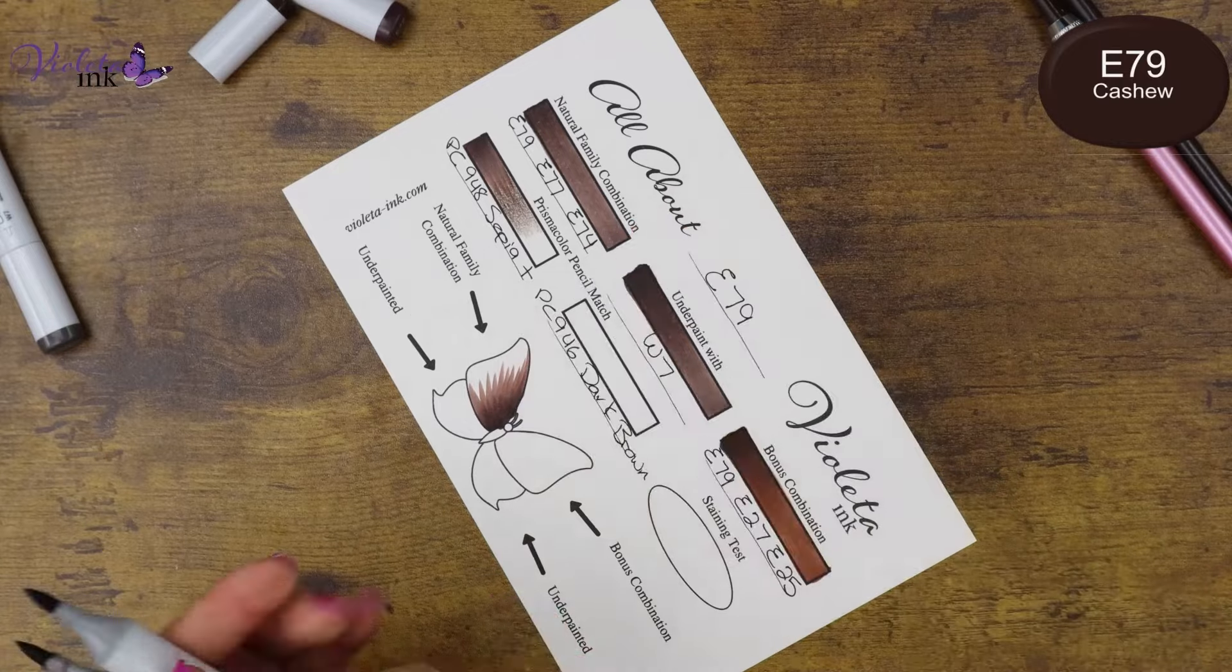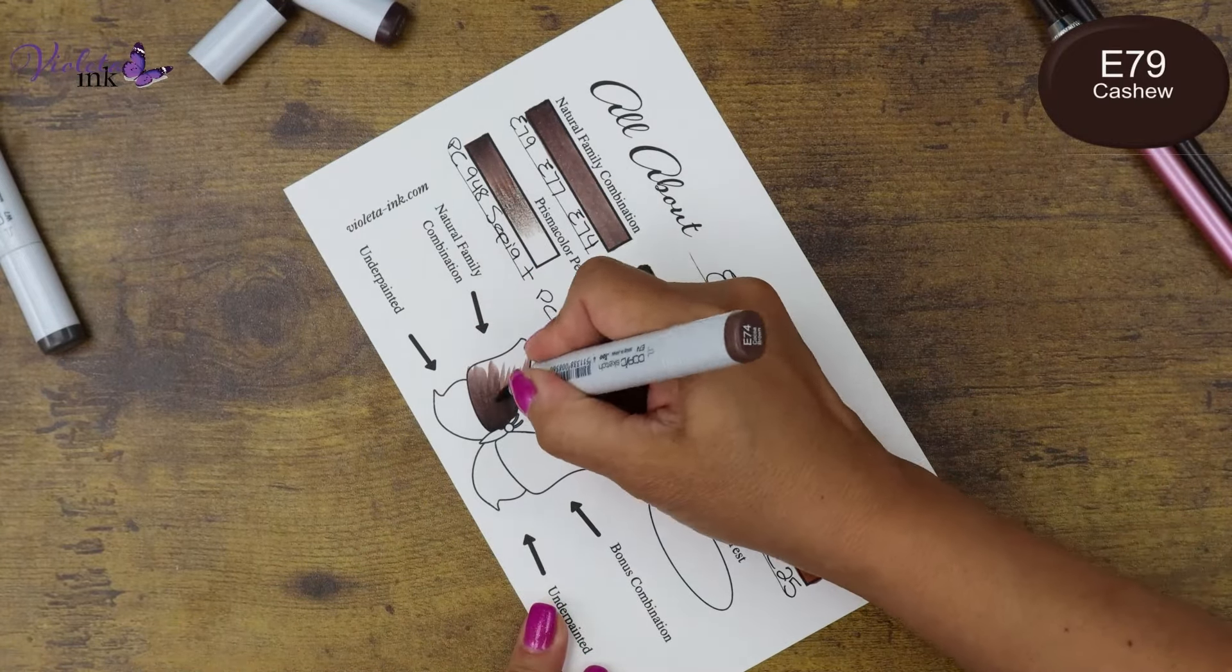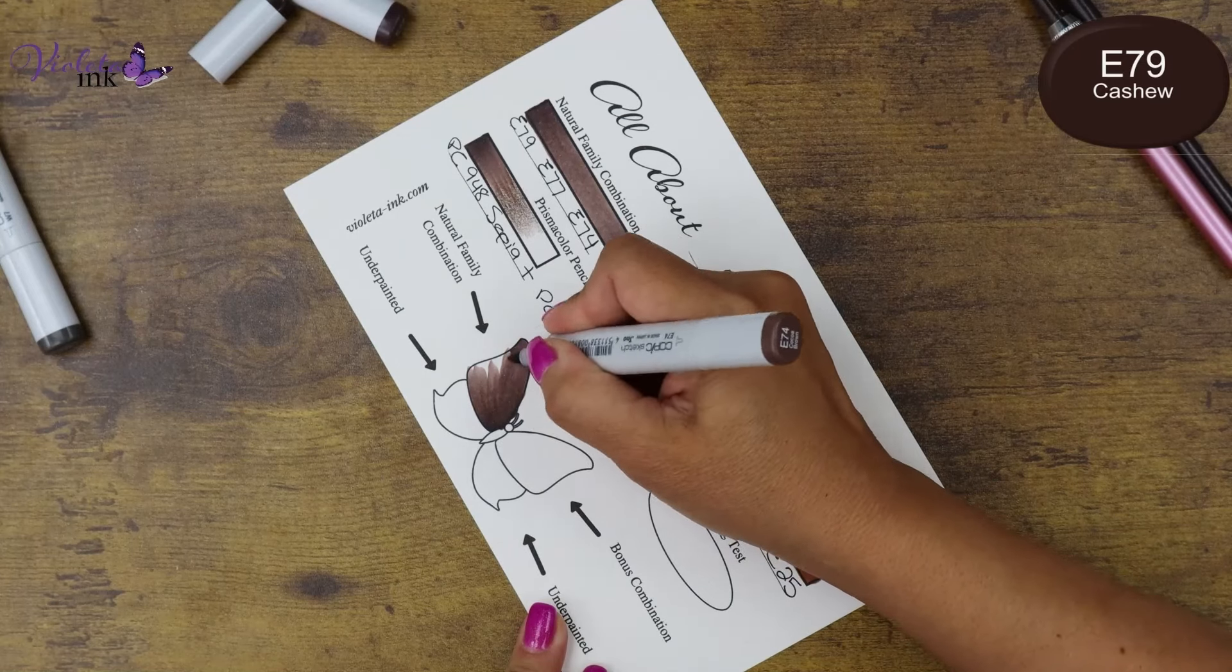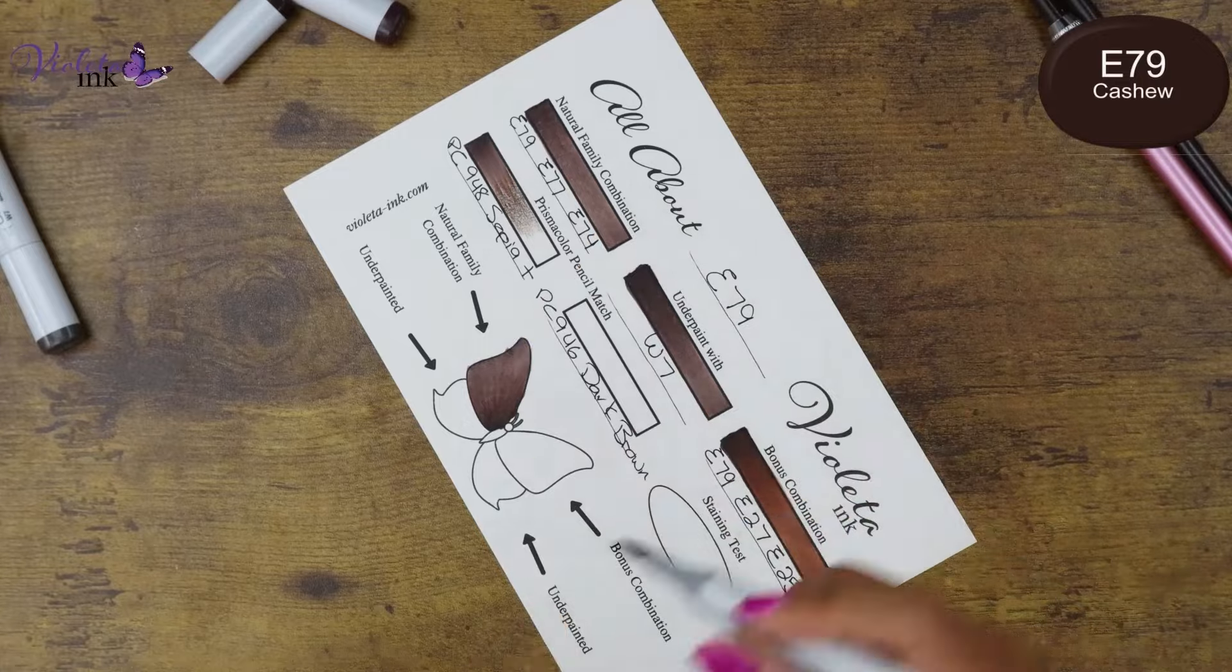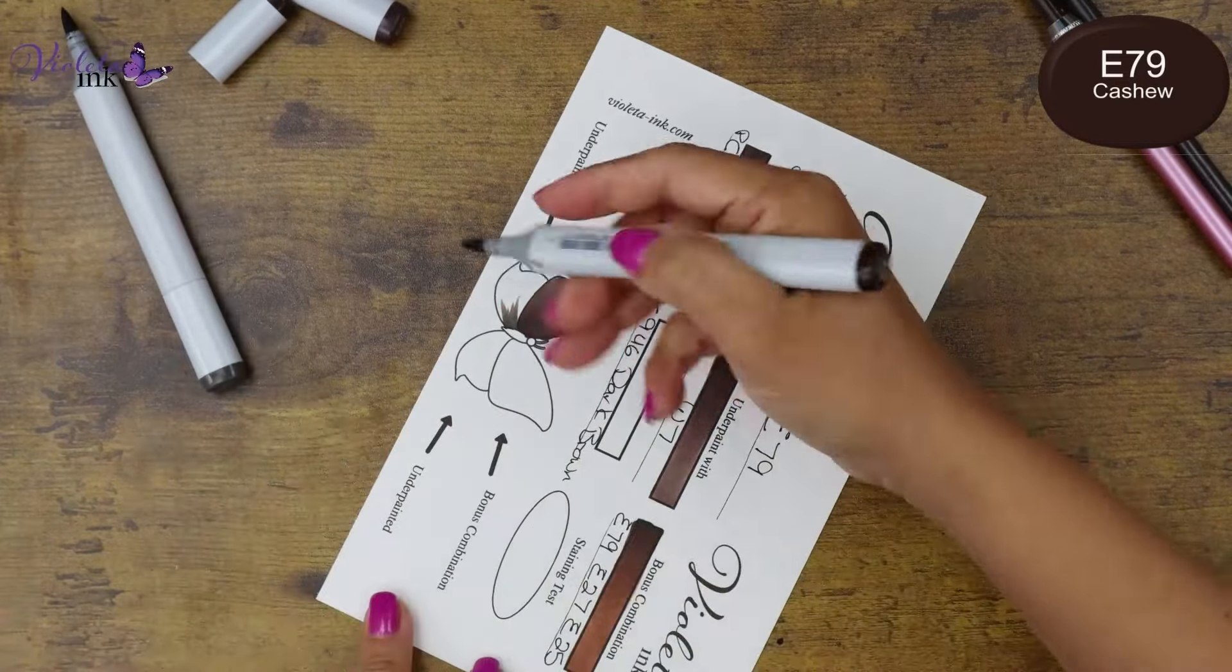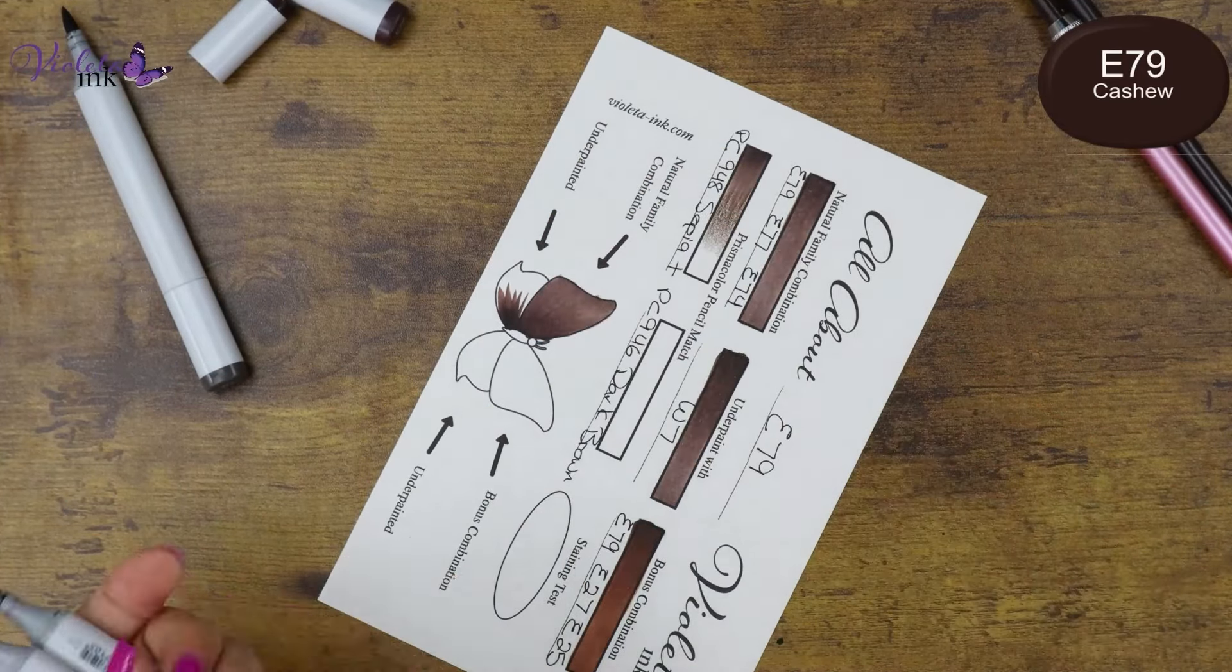E79, E77 and E74. This is a little bit sped up so it's a little bit faster than what I color. We're trying to make the videos short and sweet, so you can just watch them in your little break from work or when you're having lunch.